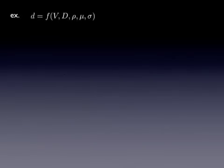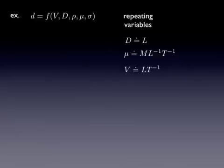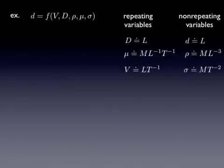For example, with the problem that we've been working, we've got little d as a function of five variables. I pick three repeating variables, and I'm left with three non-repeating variables.